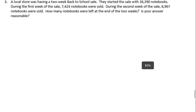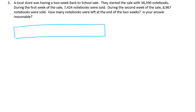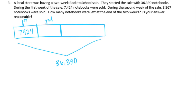Number three. A local store was having a two-week back-to-school sale. They started with 36,390 notebooks. During the first week, 7,424 notebooks were sold. During the second week, 8,967 notebooks were sold. How many notebooks were left at the end of the two weeks? Let's draw a tape diagram: the whole sale has 36,390 notebooks; first week sold 7,424; second week sold 8,967. Let's estimate first by rounding to the nearest thousand.